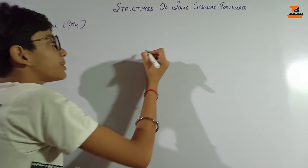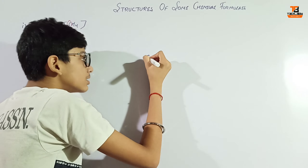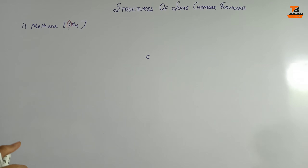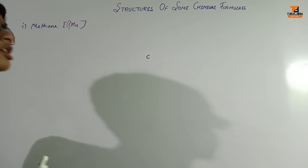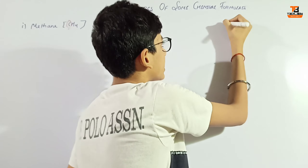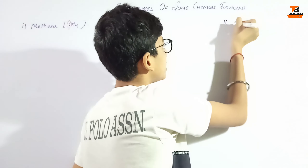We will keep carbon in the middle. Carbon's atomic number is 6, so its electron configuration is K and L shell - 2 and 4. So carbon will have 4 valence electrons, which we will indicate as 1, 2, 3, 4 around the carbon atom.